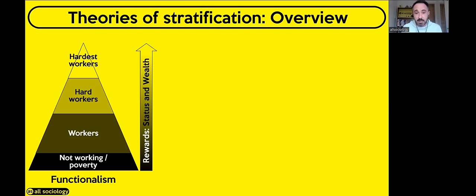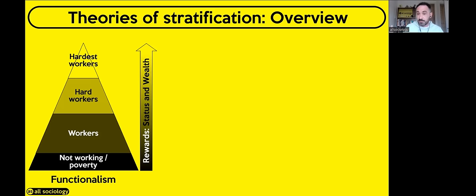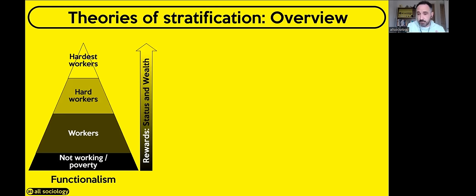According to Functionalists, society is stratified according to hard work — hard work gets you rewards. By rewards we mean money, status, wealth, income, property. The people that do best are ultimately those who work the hardest. According to Functionalists the way society is stratified is based on hard work and meritocracy, which means everyone has an equal chance of success but it's the hard work you put in that gets you rewards.